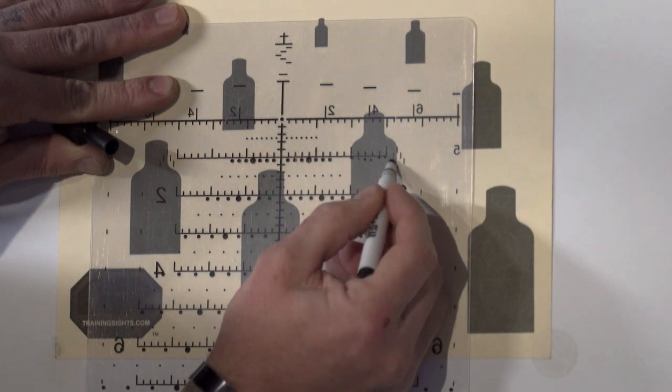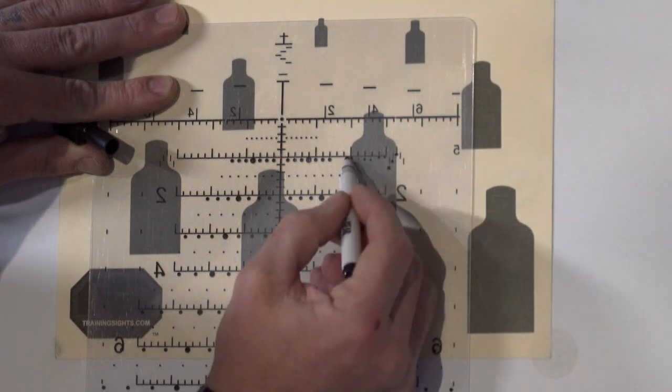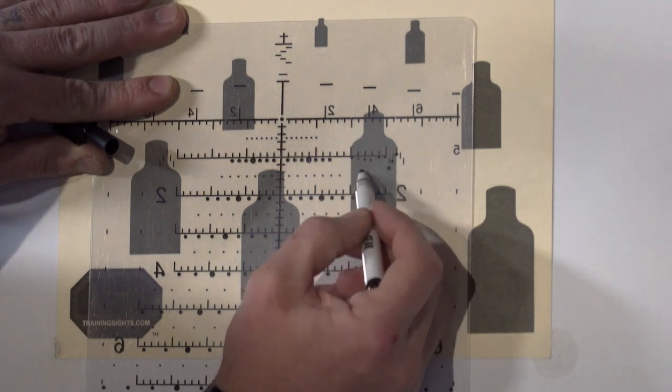And then these are 0.1 subtensions with the Horus Tremor 3. 0.1, 0.2, 0.3. So this target mills 1.3 mils in width.